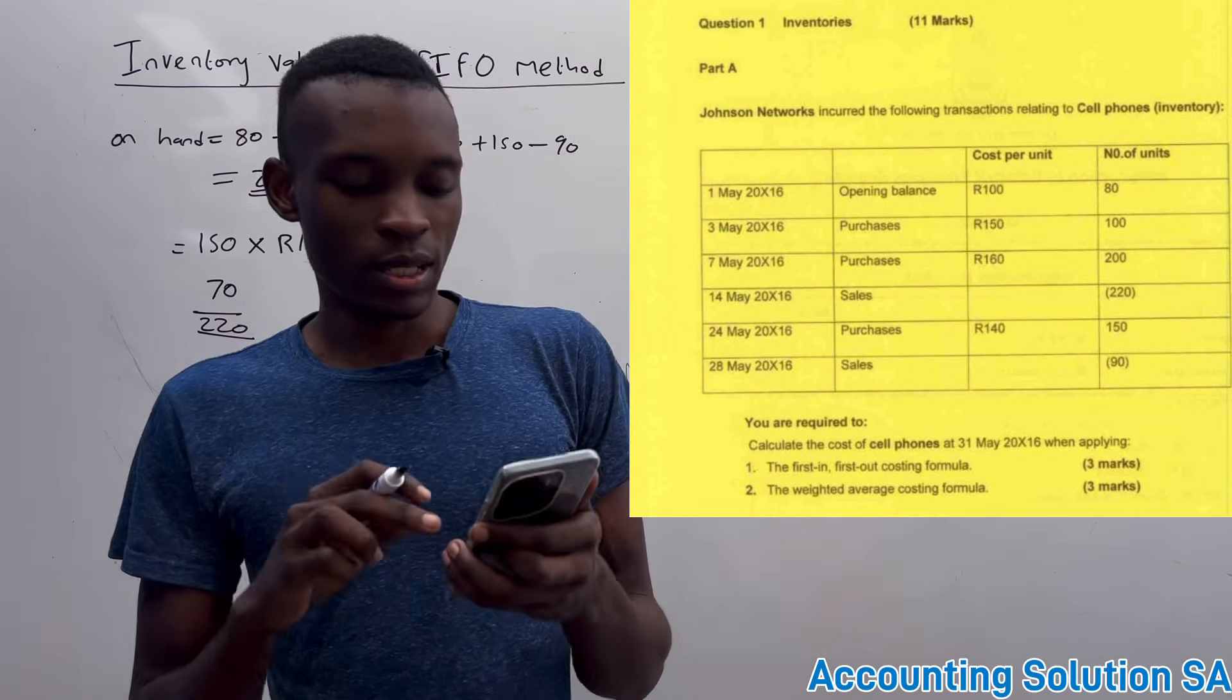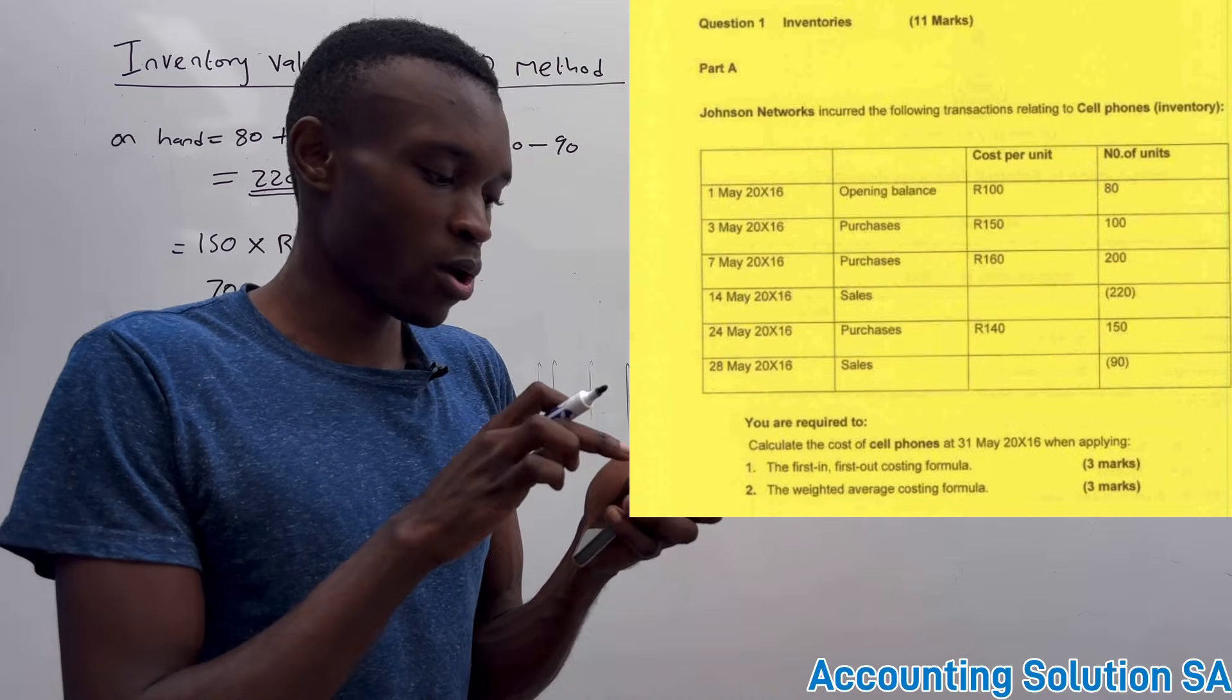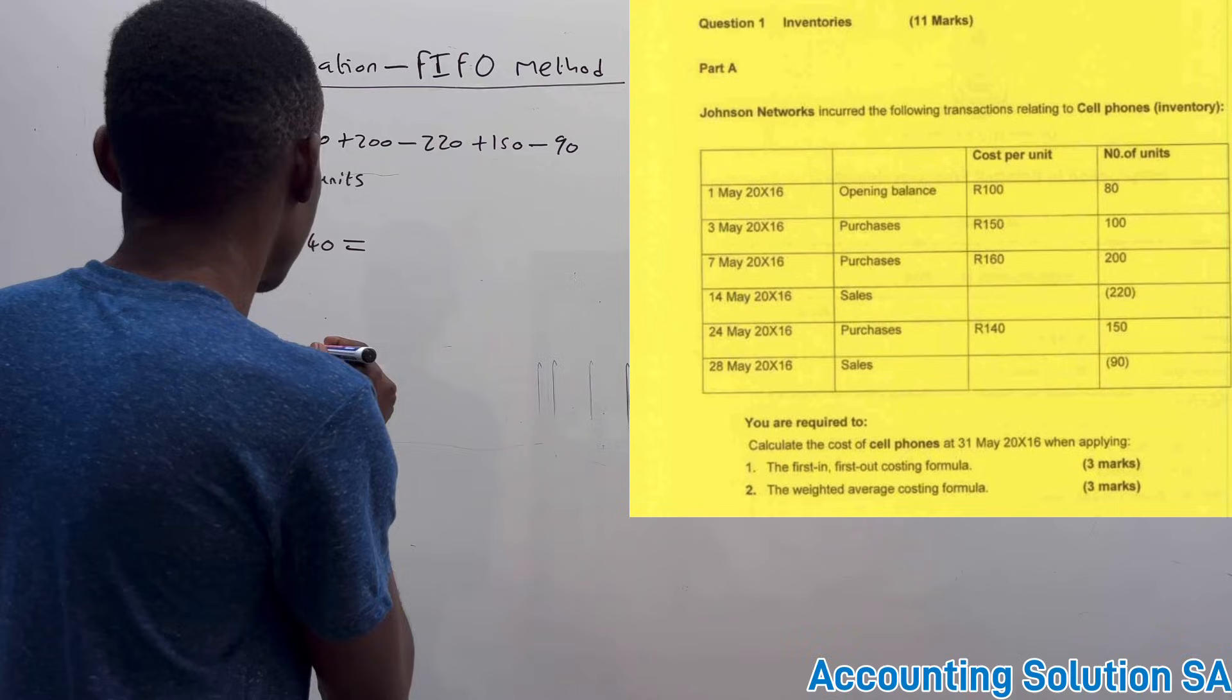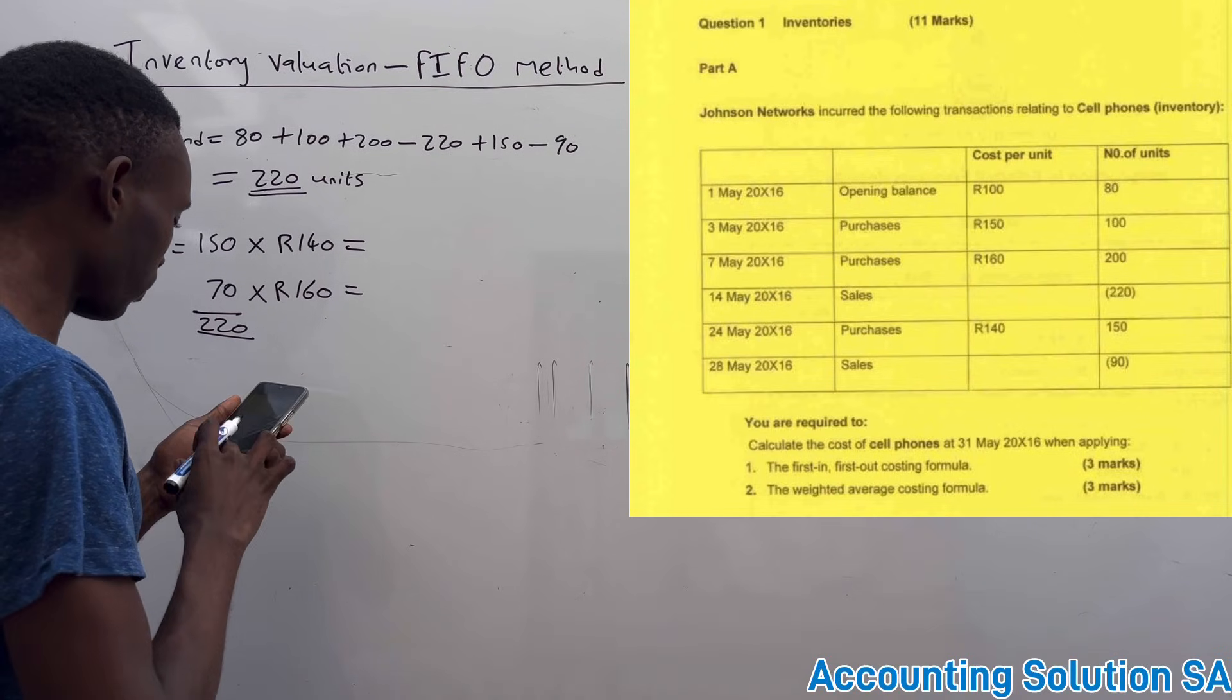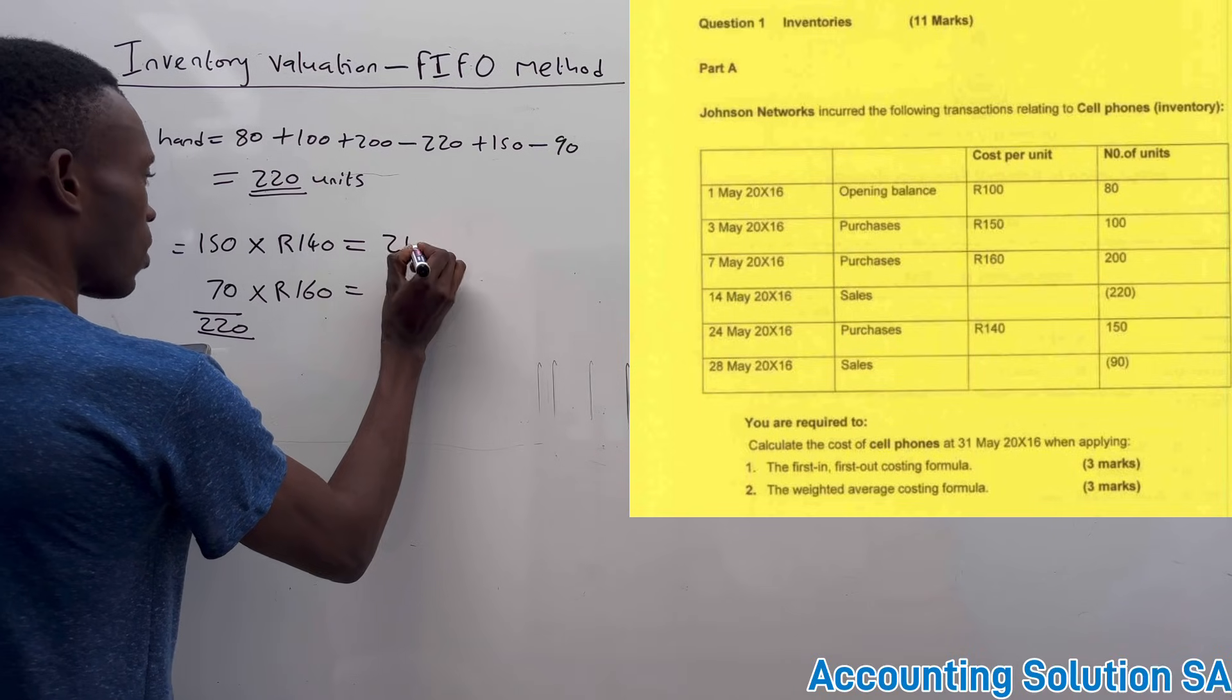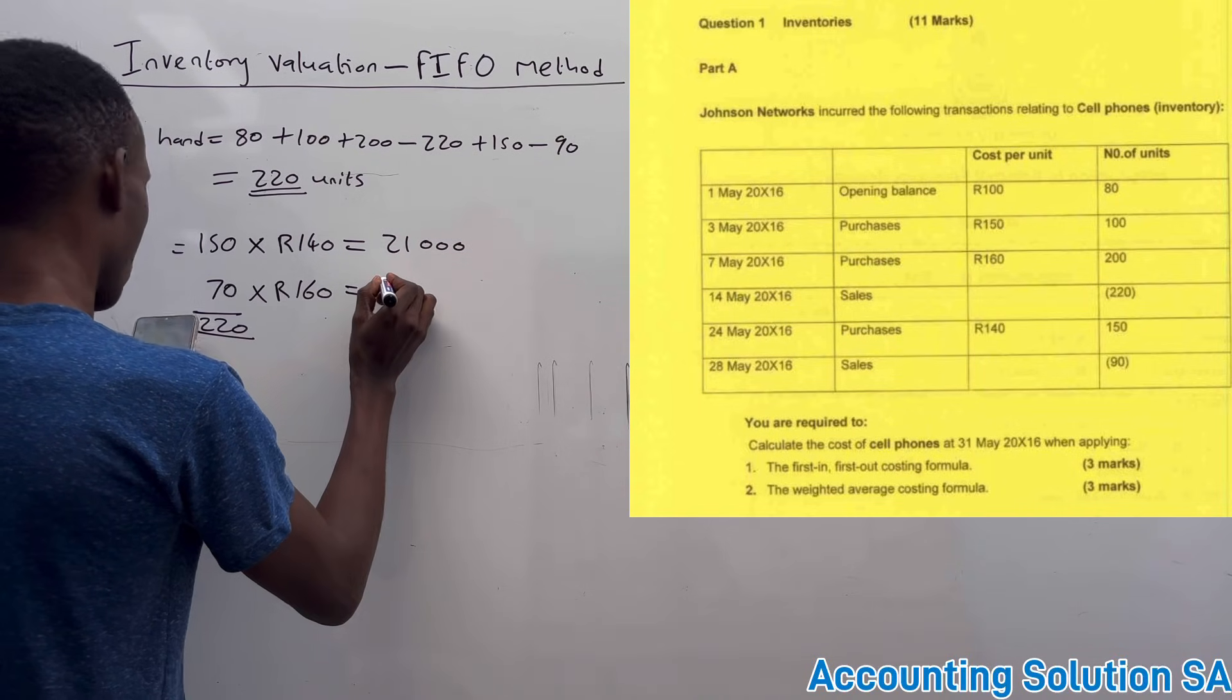And if you do this calculation, this side you are going to get 21,000 and the other side you are going to get 14,000.